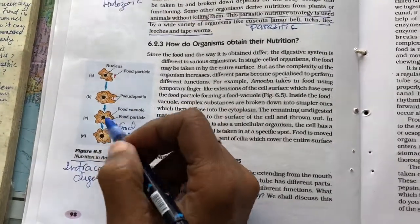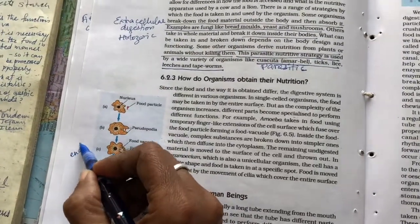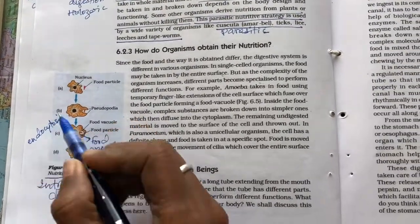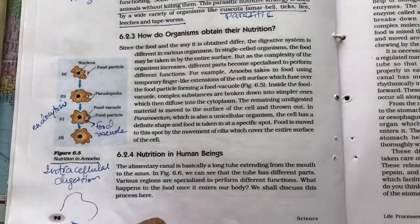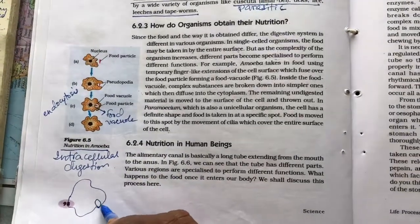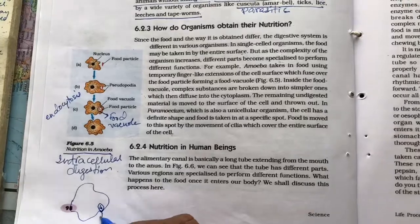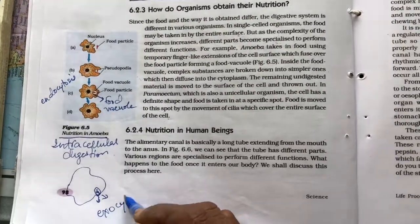The intake of food is called endocytosis. And whatever remains, suppose there is something remaining within this, so that will be thrown out from this side and this what we say is the exocytosis.